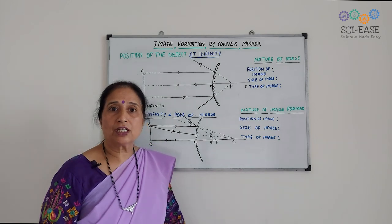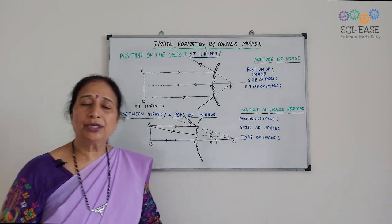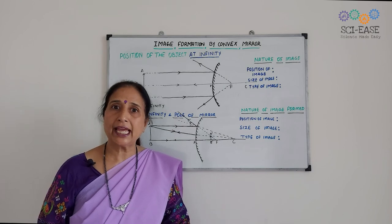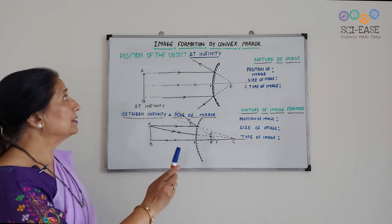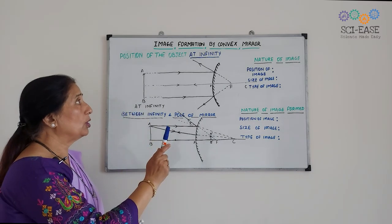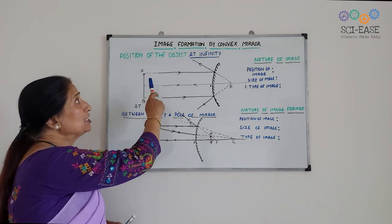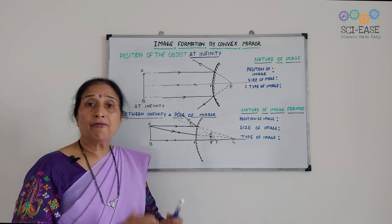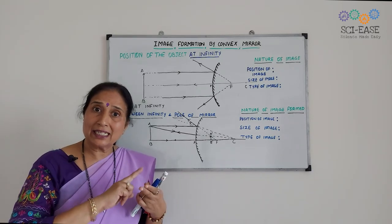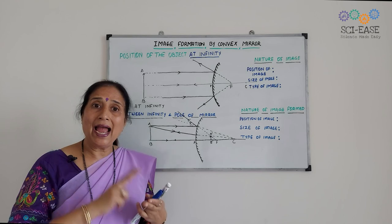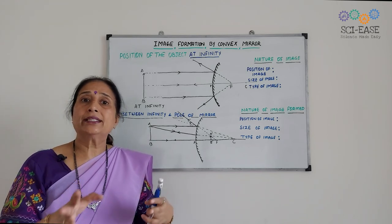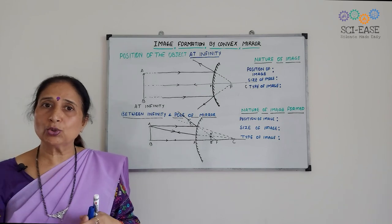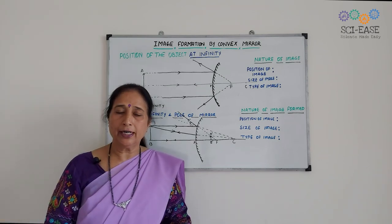In the last video I told you how to draw the ray diagrams for the concave mirror. Here we will draw the image formed by the convex mirror when the object is at infinity, and the second case when the object is at finite distance. Only these two ray diagrams we will draw here.